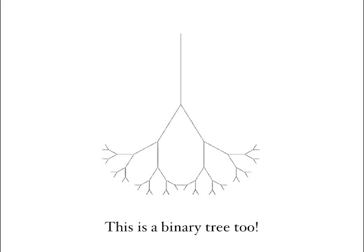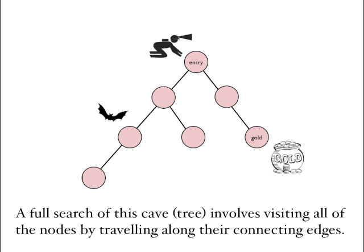When talking about data structures in computer science, we usually draw the tree upside down, with the root at the top and the leaves at the bottom. We can think of many structures — for instance in a game world — as trees. Here we have an illustration of a cave, with the entry at the top forming the root of the tree. Scattered throughout the cave system are different things, such as gold in the bottom right corner or a bat in one of the nodes. The tree is made up of these nodes connected by paths.